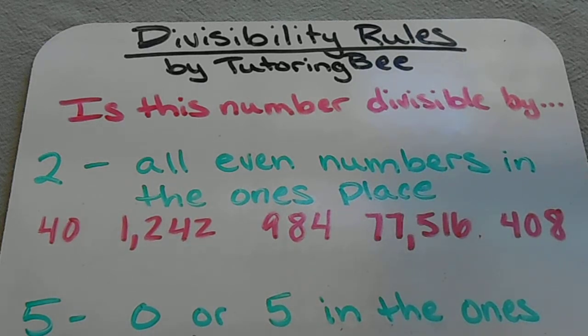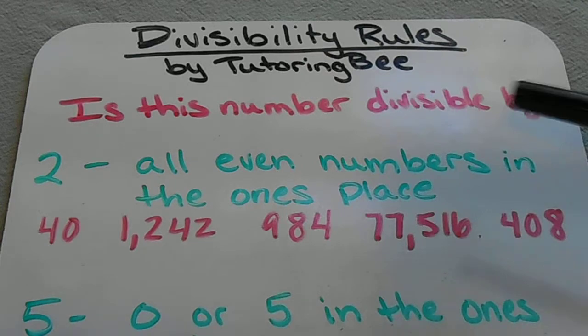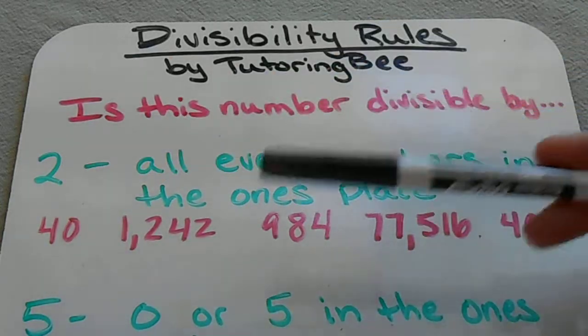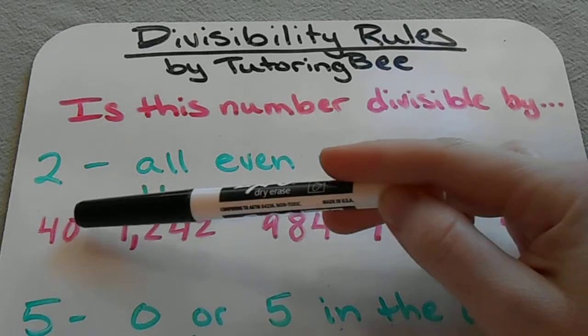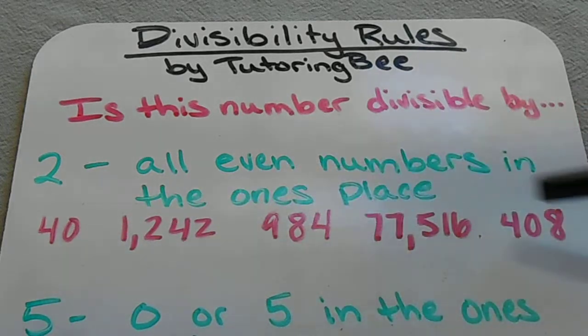Some of the easier ones to remember is 2. If a number is divisible by 2, it's going to have an even number in the ones place. So if there's a 0, 2, 4, 6, or 8 in the ones place, it's going to be divisible by 2.